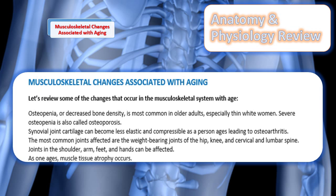Age-related changes the RN needs to be aware of include osteopenia, or decreased bone density, which is most common as people get older, especially in thin white women. Severe osteopenia is called osteoporosis. Synovial joint cartilage may become less elastic, compressible, and lead to osteoarthritis. The most common joints affected are the weight-bearing joints — the hip, knee, cervical, and lumbar spine — though the shoulder, arm, and feet can be affected as well. As a person ages, muscle tissue atrophies and patients may experience related problems.